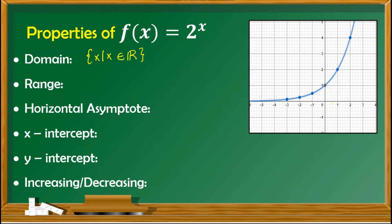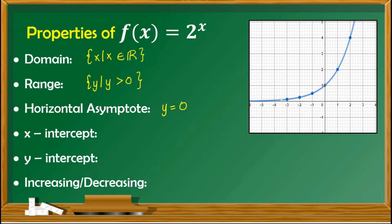Looking at the graph on the y-axis, all values of y are found only above the x-axis, therefore the range is the set of y such that y is greater than 0. For the horizontal asymptote, it is y equals the value of h. Since h is 0, we have y equals 0, and looking at the graph it is obvious that the horizontal asymptote is the x-axis. As for the x-intercept, looking at the graph, there is no point that touches the x-axis, therefore the x-intercept is none.